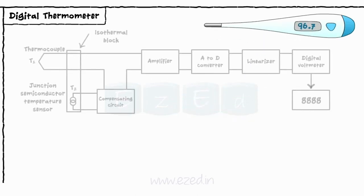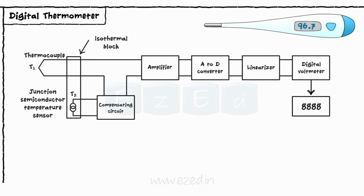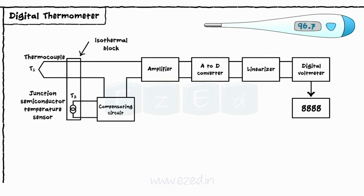The block diagram of a digital thermometer using thermocouple is as shown. As we are using thermocouple, we have two measuring junctions, T1 and T2.